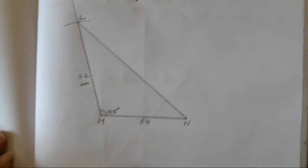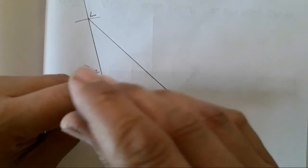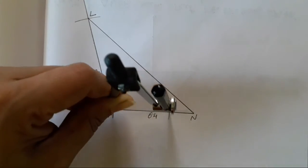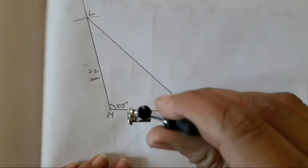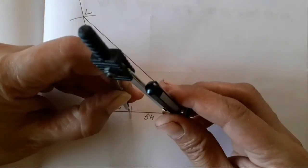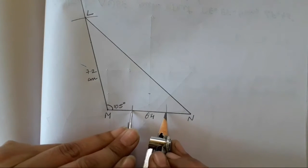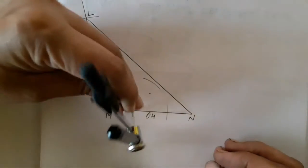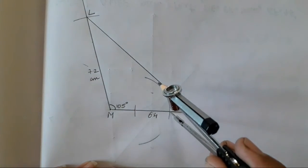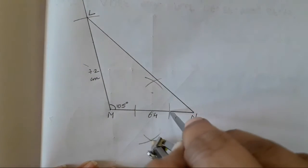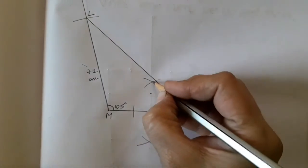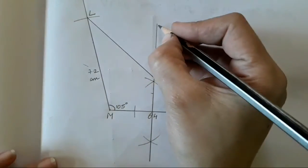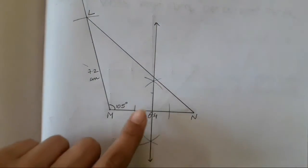Now we need to bisect the segment. I will take a distance more than half — take a small arc, distance more than half, a little more than half. Then another arc — keep the same distance. Take the measurements of these two arcs and draw an arc so that we will get the side bisected. Using these two points, draw a line. This segment is now being bisected.